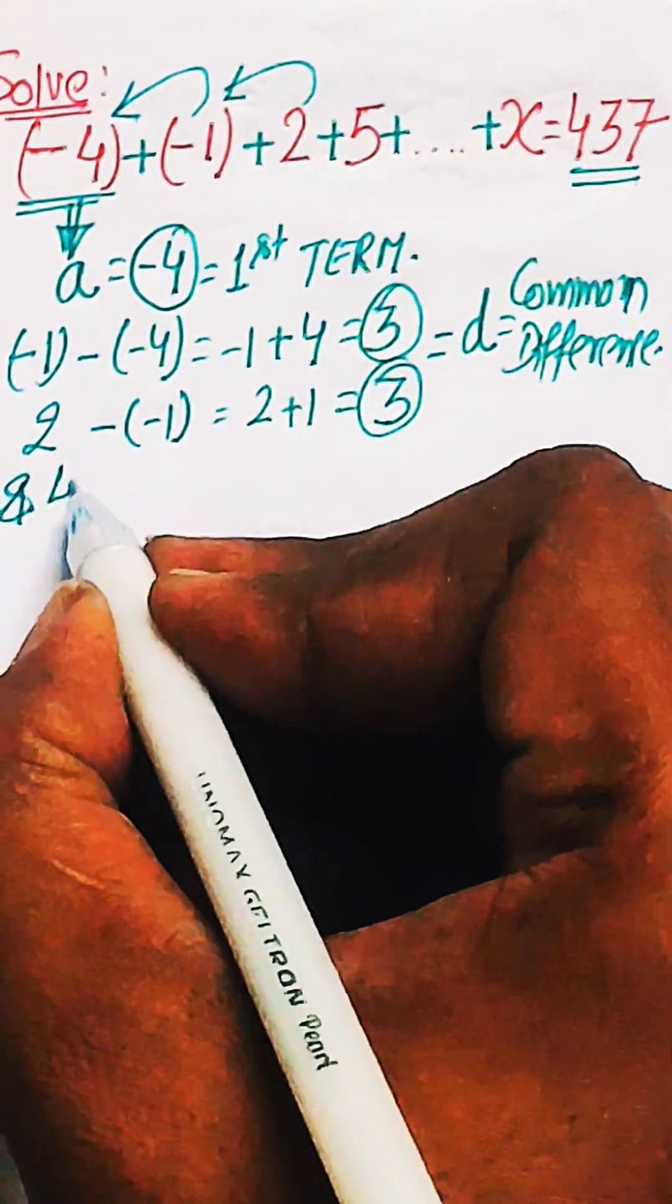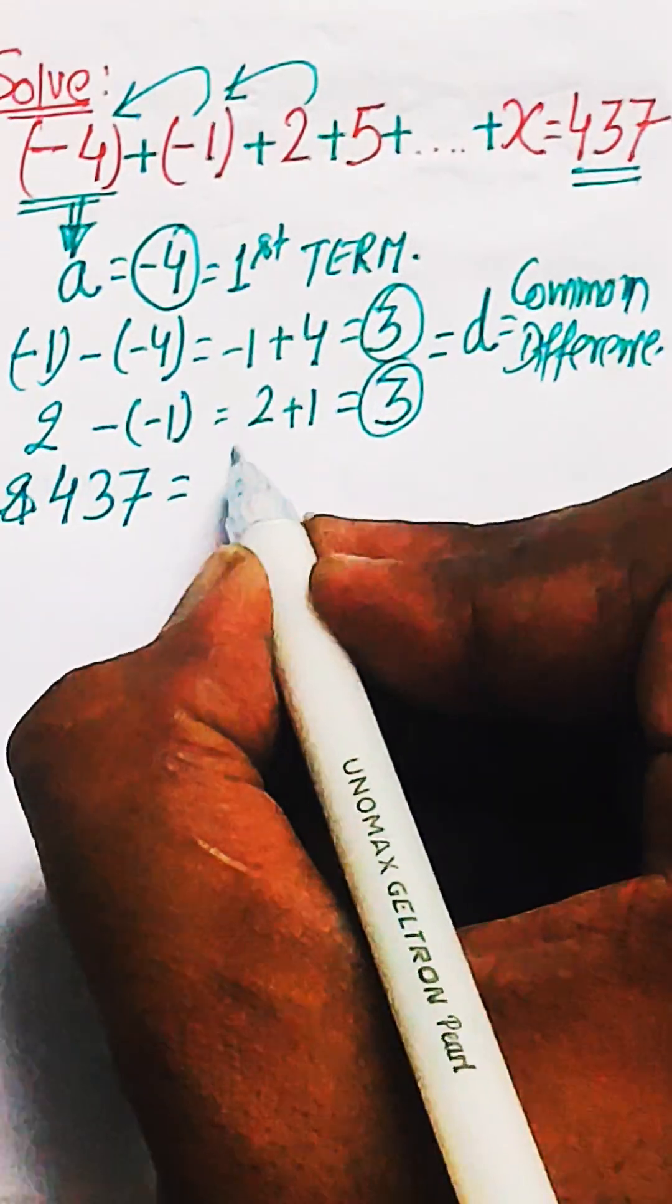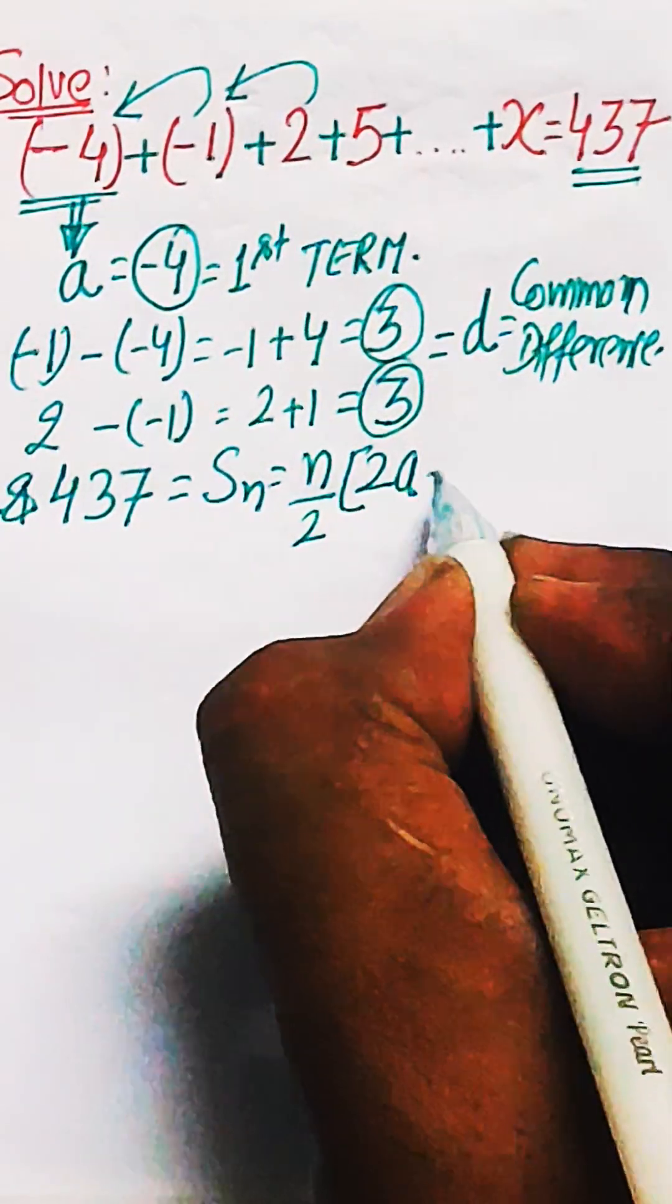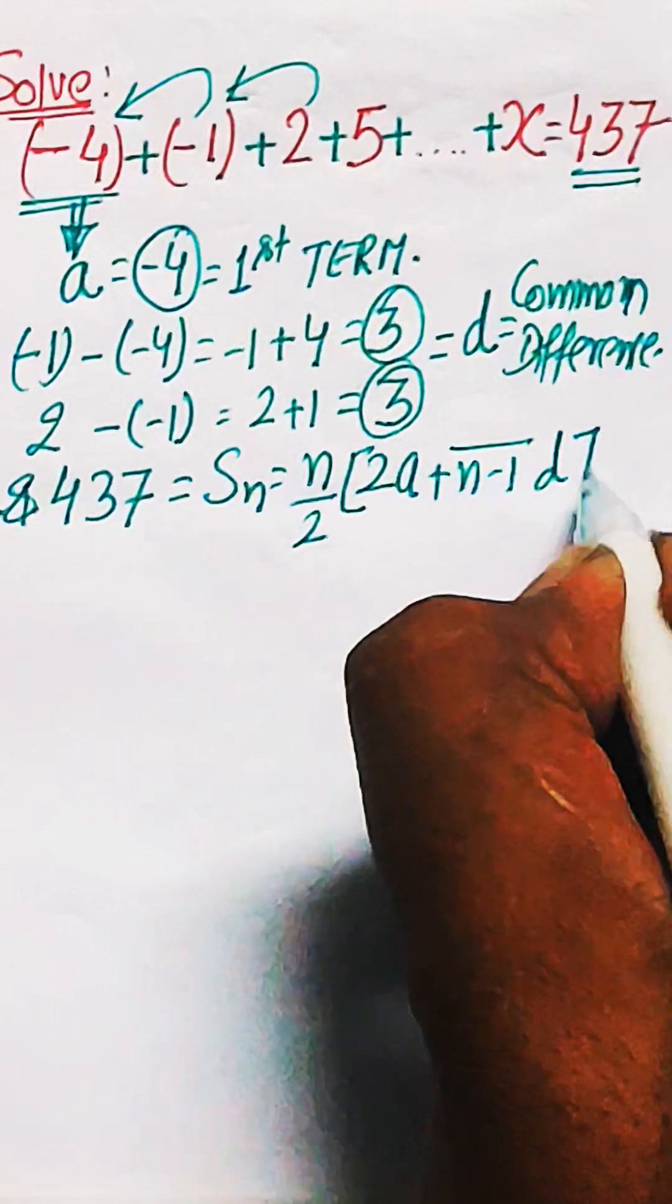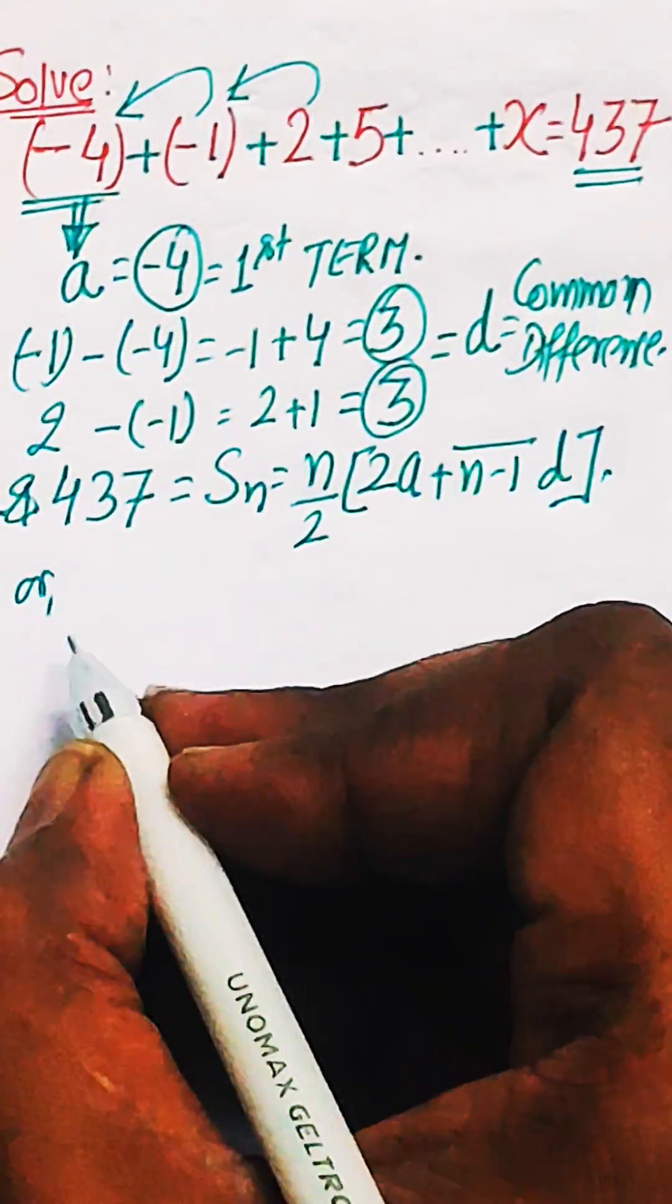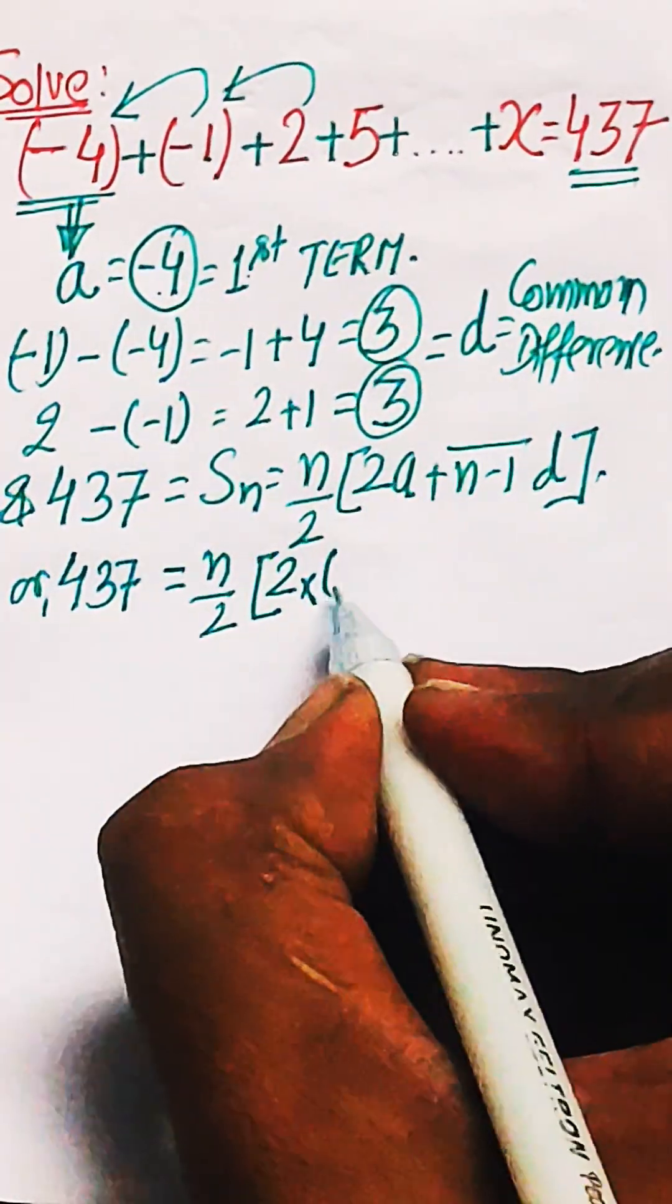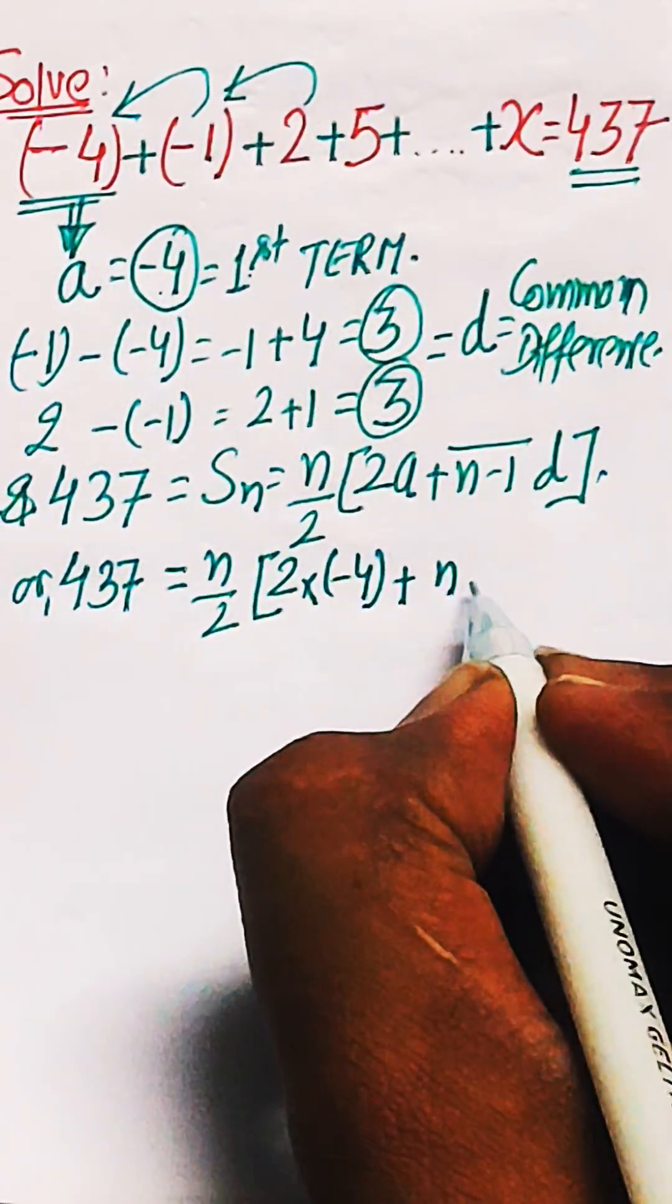Now the sum of the N terms, that is 437, is given to you. That is sum of entire terms of this AP is 437. So use the formula sum of N terms of AP, that is Sn equal to N by 2 into 2A plus N minus 1 into D, where A and D are the first term and the common difference which we have already calculated.